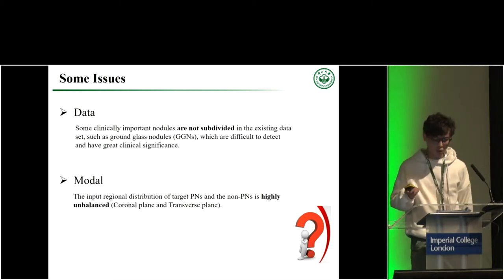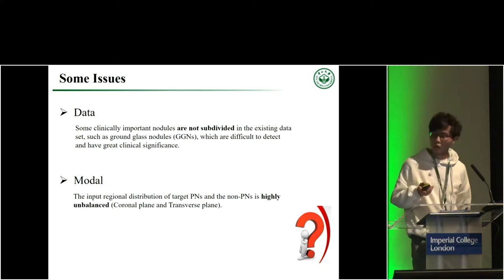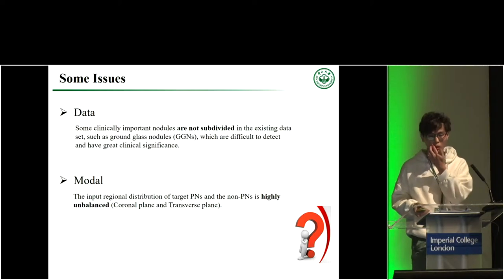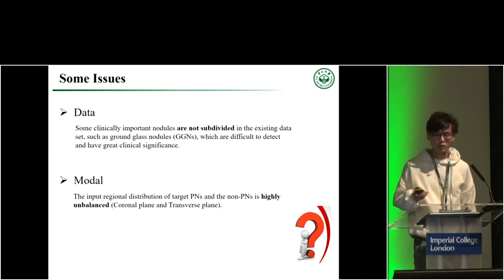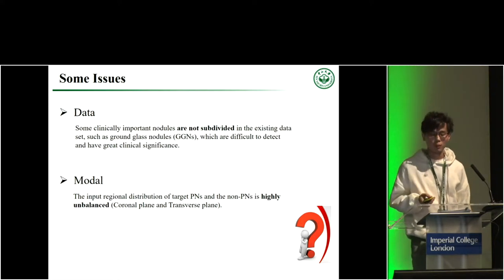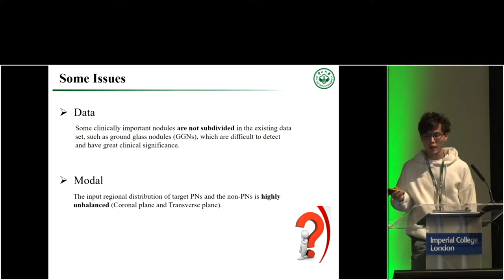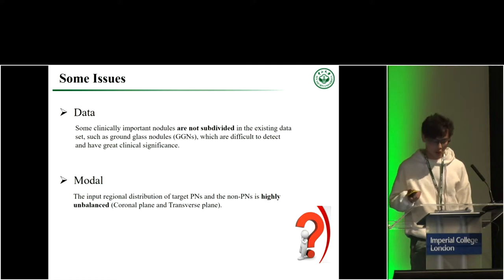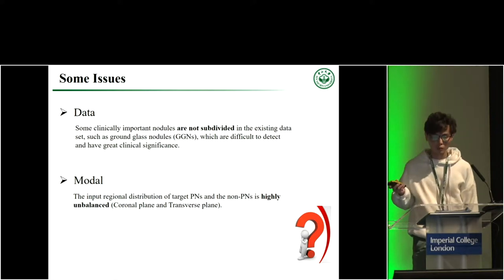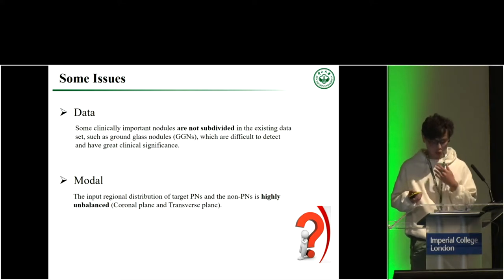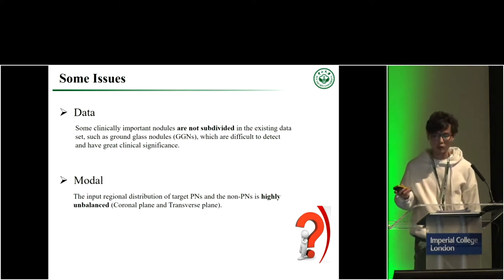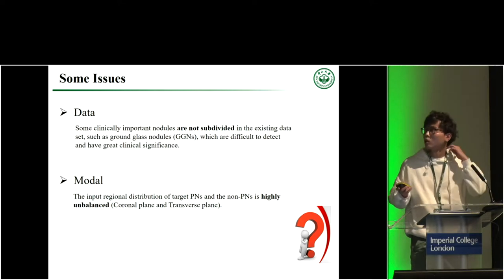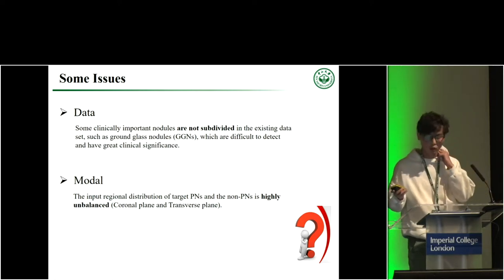However, there are two issues in pulmonary nodule detection. In terms of data, some important nodules are not included in existing datasets, such as ground glass nodules (GGNs), which are difficult to detect and have greater clinical significance. In terms of model, the distribution of true PNs and non-PNs is highly unbalanced, but existing methods usually ignore this problem.